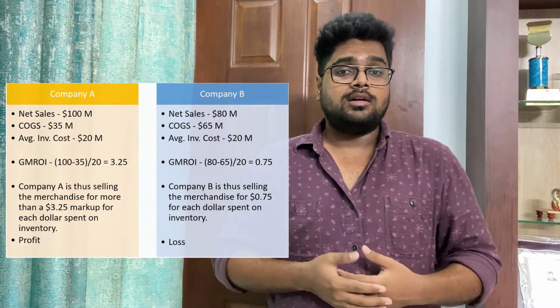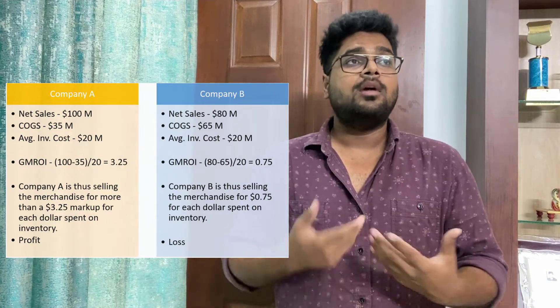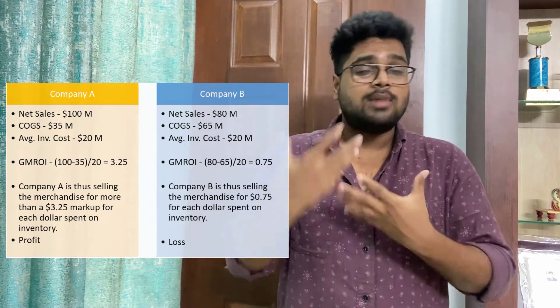In coming videos we will definitely learn about net sales, gross margins, net margins, and cost of goods sold — there's already a video up on the channel for cost of goods sold and I'll leave the link in the video. These mathematical formulas are really important to understand the whole retail industry and the science and maths behind the number game. Hit the like button, subscribe, and please follow. Thank you.